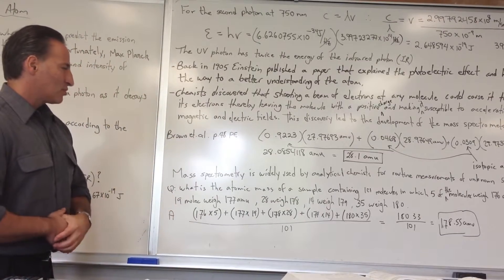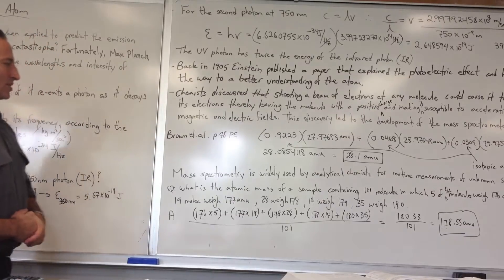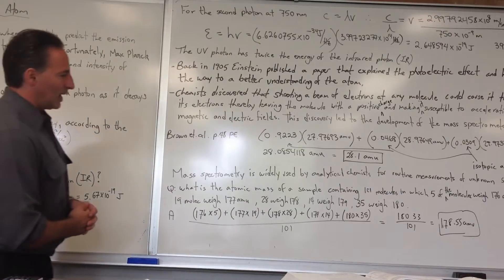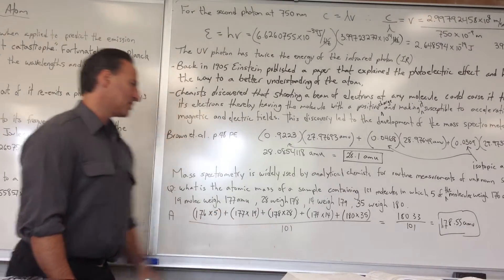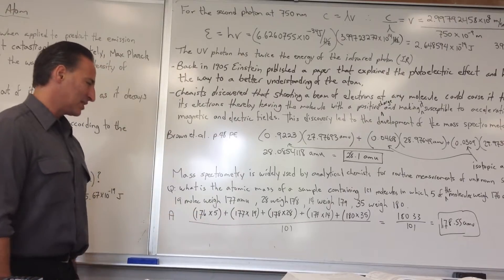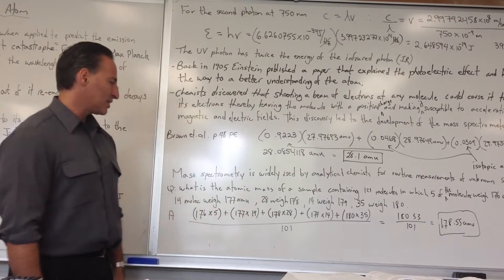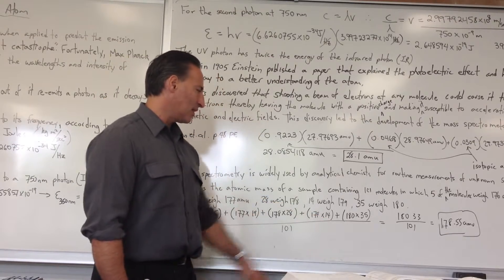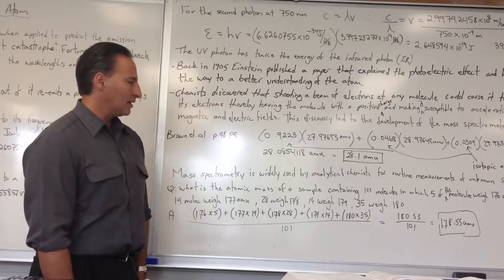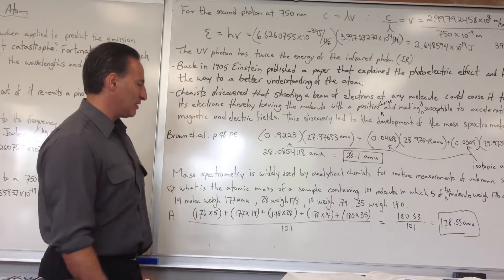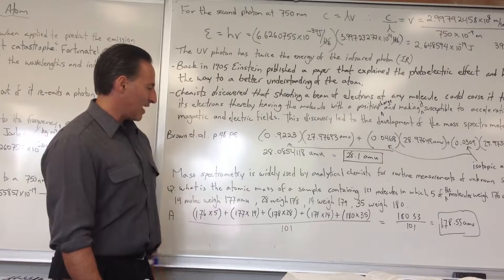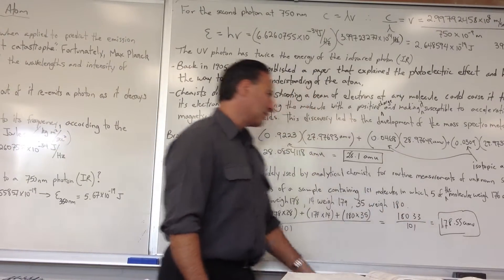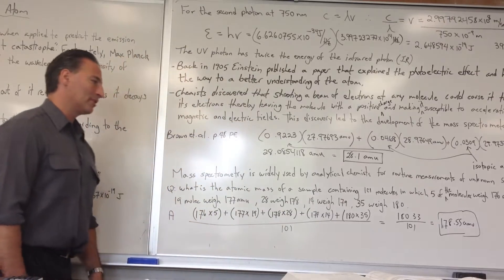Mass spectrometry is widely used by analytical chemists for routine measurements of unknown substances. In another example, we have a sample of 101 atoms: 5 weigh 176, 19 weigh 177, 28 weigh 178, 14 weigh 179, and 35 weigh 180. To find the atomic mass of the average atom, you multiply each isotope's mass by its number of atoms, sum the results, and divide by the total number of atoms — giving an atomic mass of 178.55 atomic mass units.